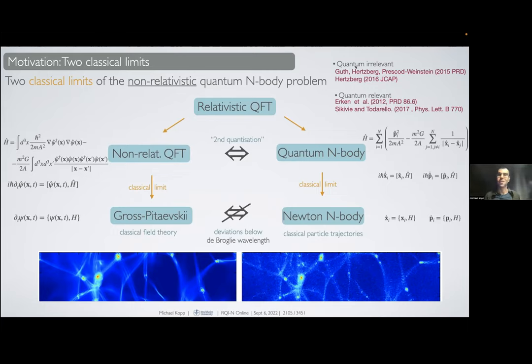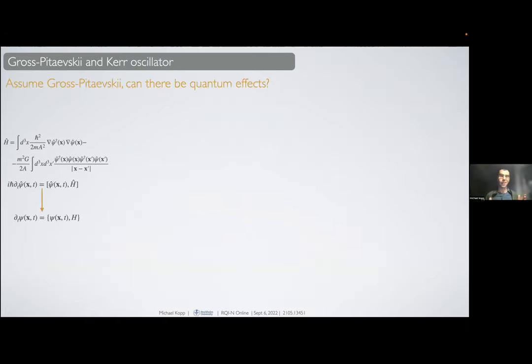What we did was I think the most conservative approach. We actually assume the Gross-Pitaevskii equation to be valid and ask can there still be on top of that quantum effects. Instead of just turning commutation relations into Poisson brackets, we instead enforce this Gross-Pitaevskii equation by choosing an ansatz for the quantum field, which is called the Hartree ansatz, and a specific initial condition which we pick to be a coherent state.